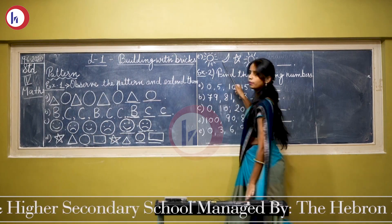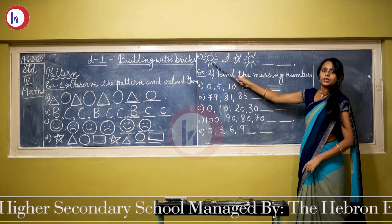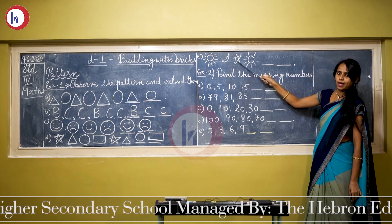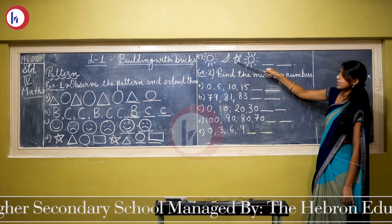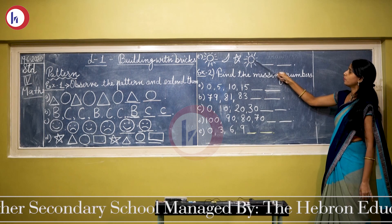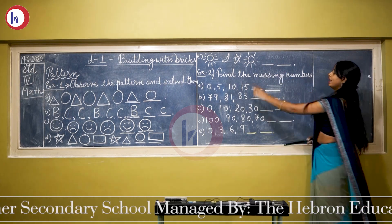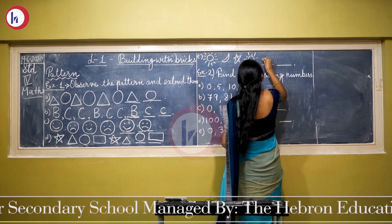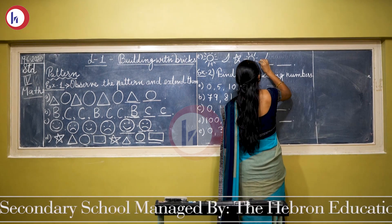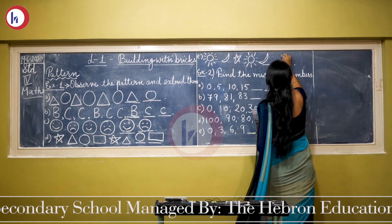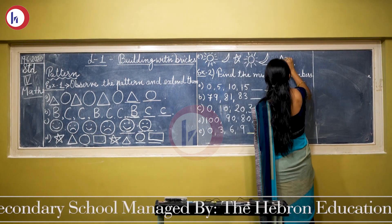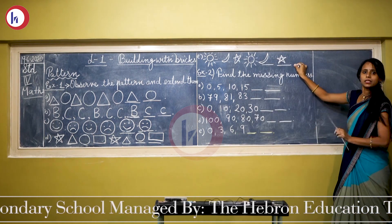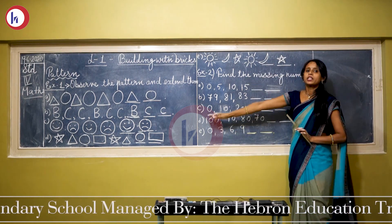Now come to the next: here is a sun, then moon, then star — and this process is repeating. Here is a sun, then after sun here is moon, so we have to draw moon here. And after this, one star. In this way, we can complete this sequence of shapes.